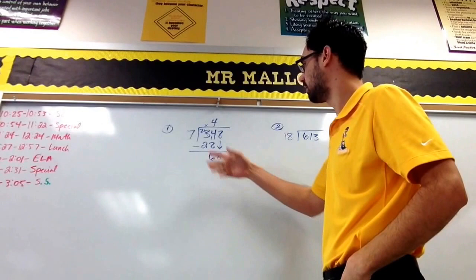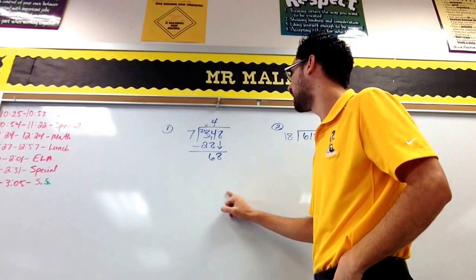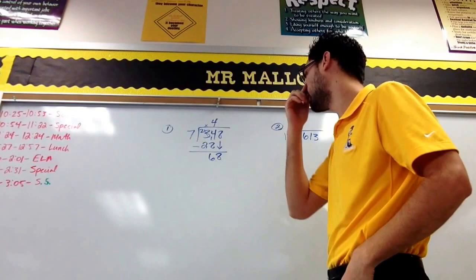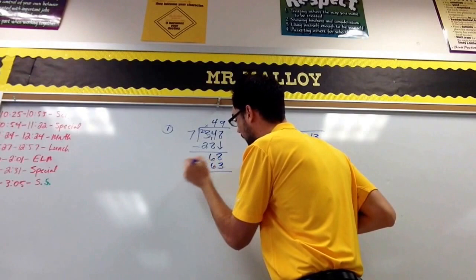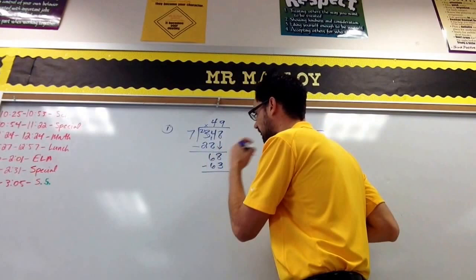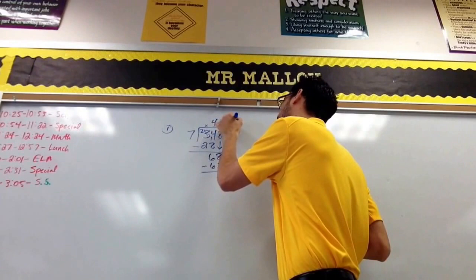And then we decide: can seven go into 68 how many times? Well, I know seven times ten is 70, so it would be seven could go into 68 nine times. I write my 9, I work back around. Nine times seven is 63. I keep everything lined up, notice how nice and neat everything is. I do my subtraction here: 68 minus 63 is 5, and that would be my remainder.